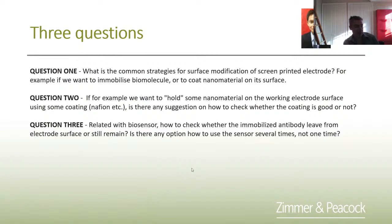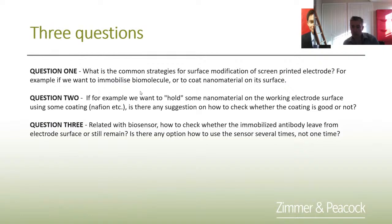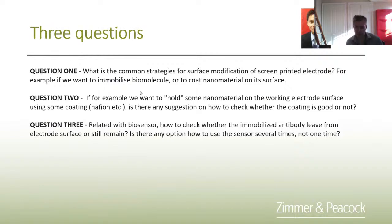This morning we're going to focus on one of our members, Isa. He had three questions for us. The first question is: what's the common strategy for surface modification of screen printed electrodes — for example, if we want to immobilize biomolecules or coat nanomaterials on the surface? The second question is: if we want to hold nanomaterials on the working electrode surface, is there any suggestion for how we can tell whether the surface is good or not? The third question is: how do we check whether the antibody is still on the surface afterwards?